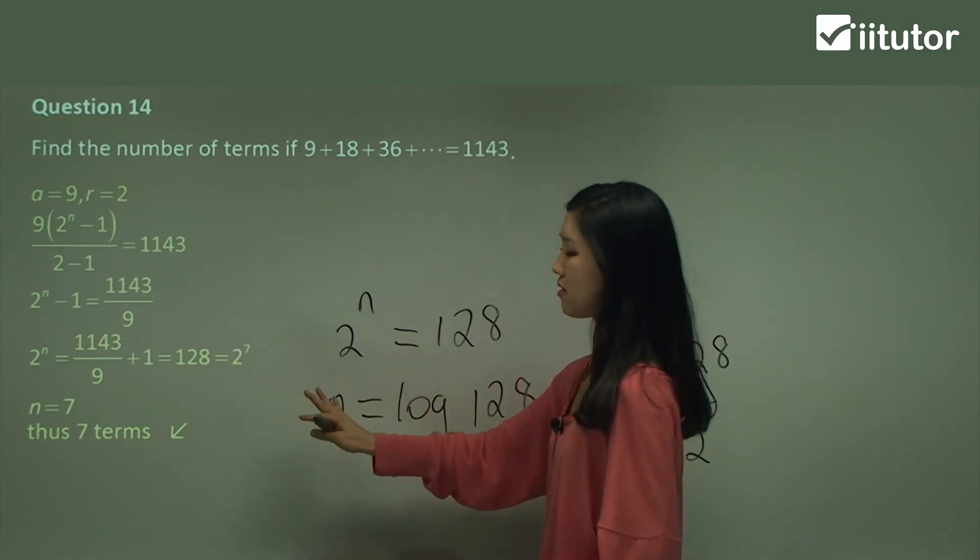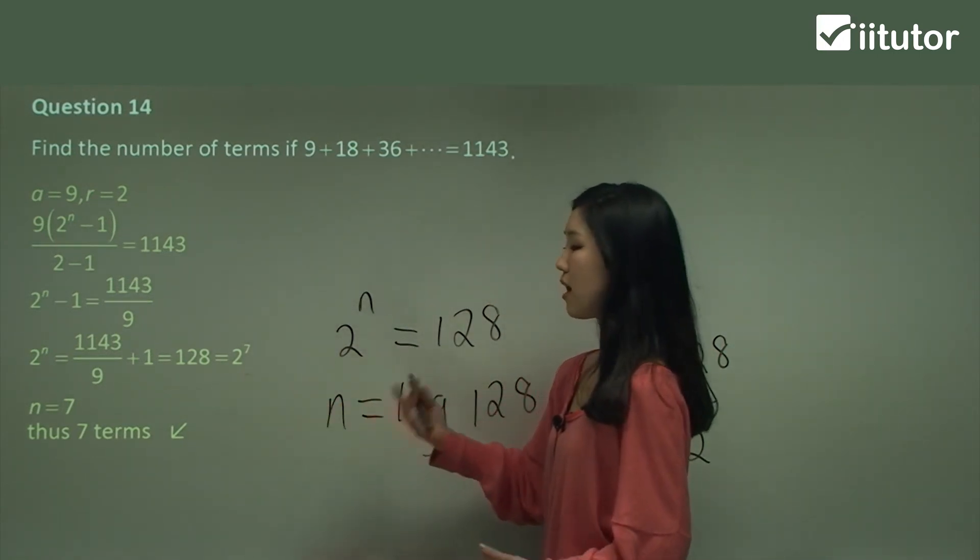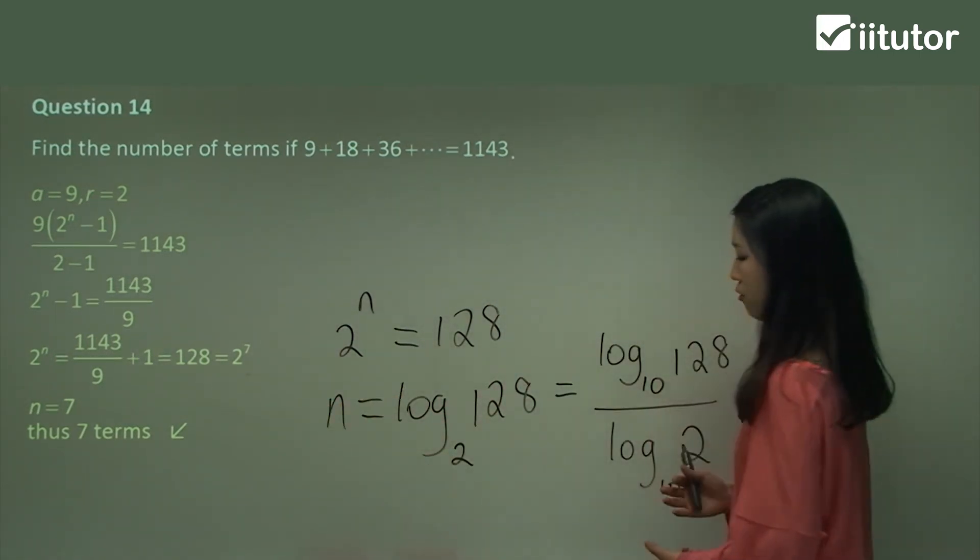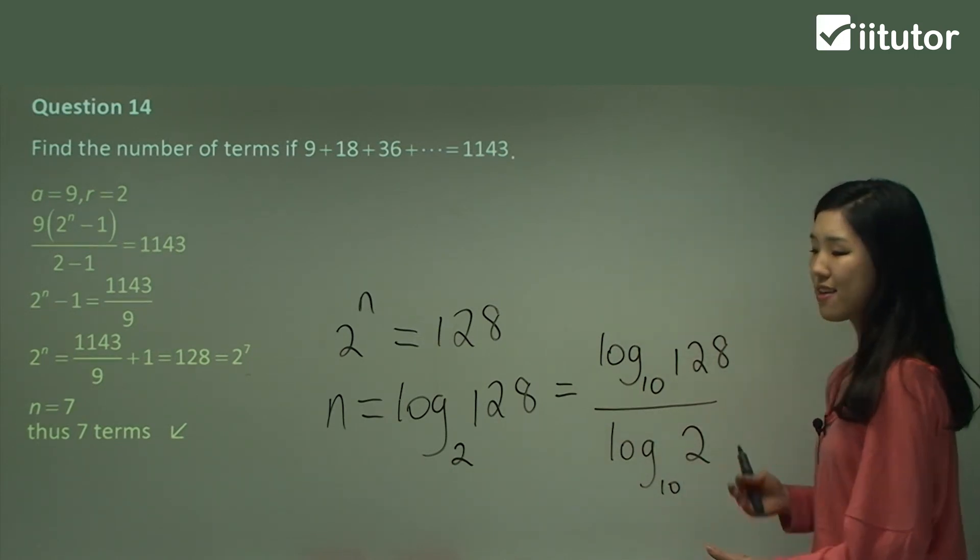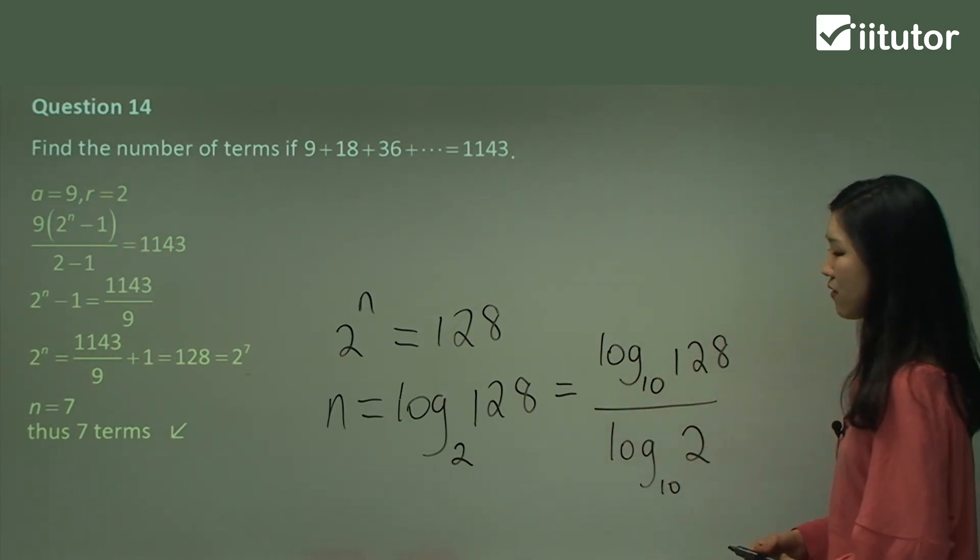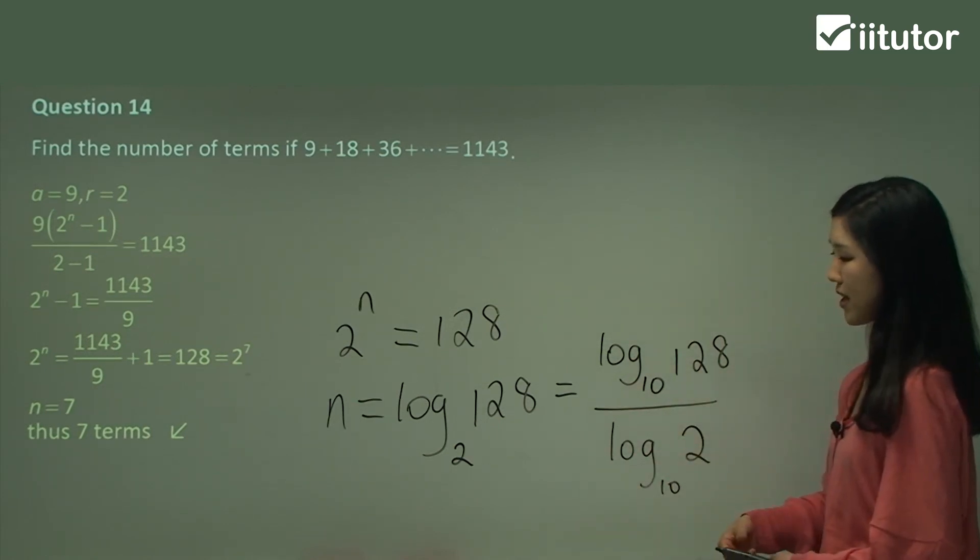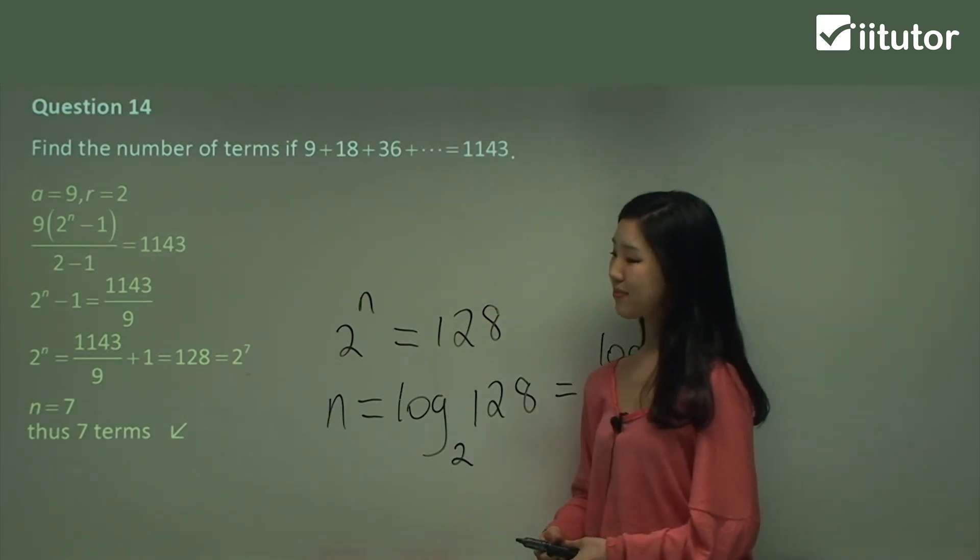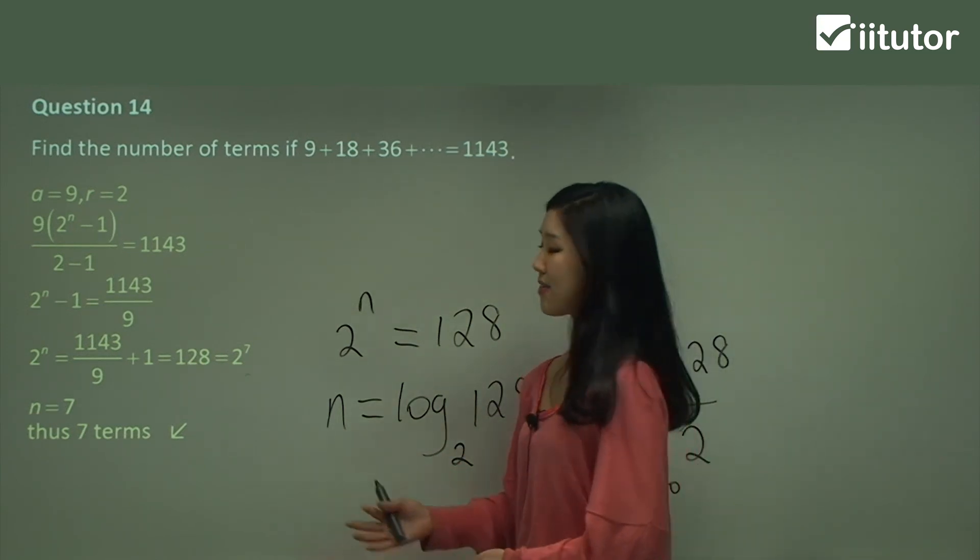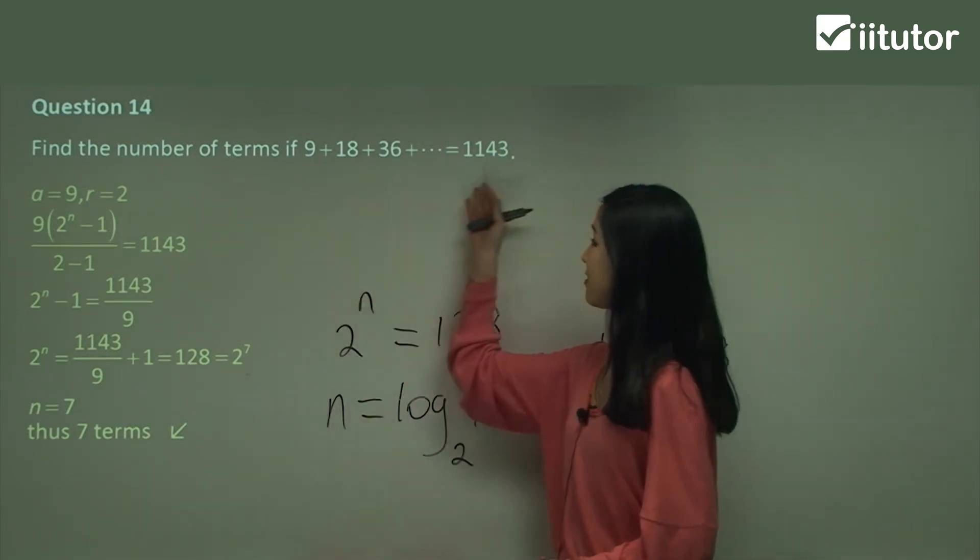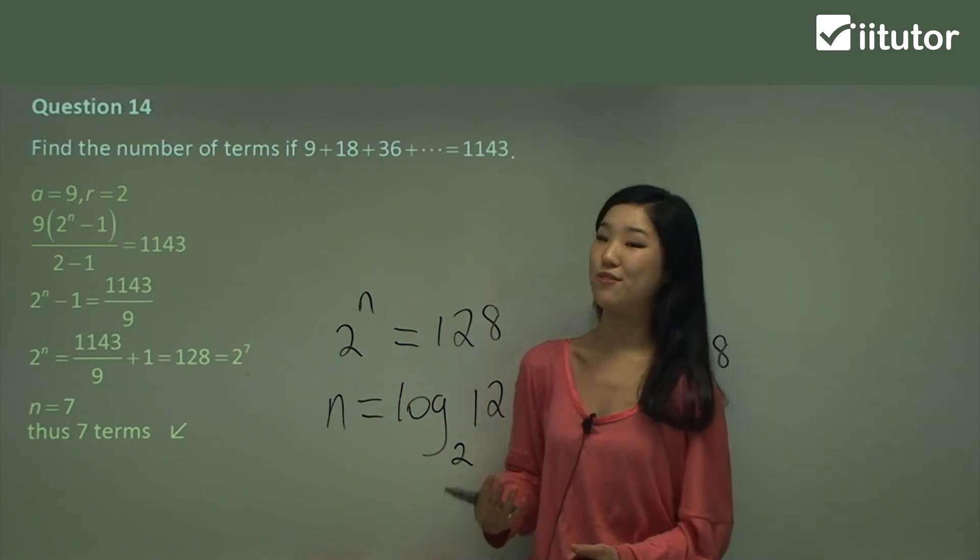But still, this way is perfectly fine guys. You can use your log rules. But I prefer using this one if you can make this 2 to the power of something. If you can't, if this is not 2 to the power of something nice, then I'd go for the log rules like this. Either way, you'll get the same answer. So if you did use your logs, this would be your case. This will be your working out. So have a look at that guys. That's question 14. Basically, there are seven terms that make a sum of 1143.